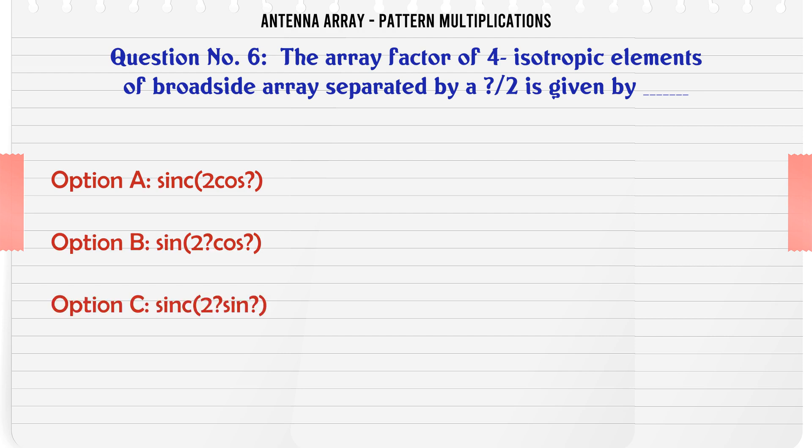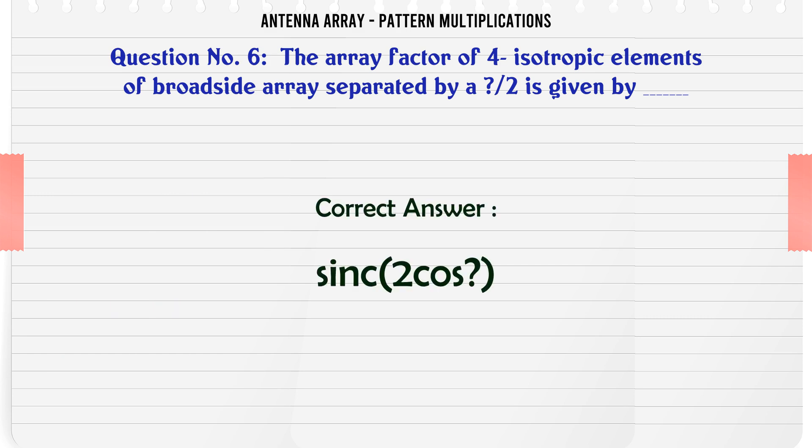The array factor of four isotropic elements of a broadside array separated by λ/2 is given by: A. cos²(·), B. cos²(·), C. cos²(·), D. cos²(·). The correct answer is sinc²(cos²(·)).